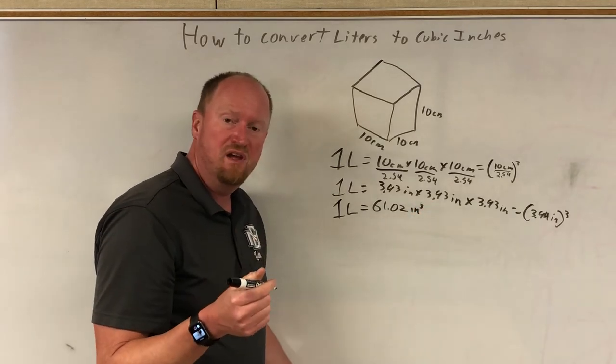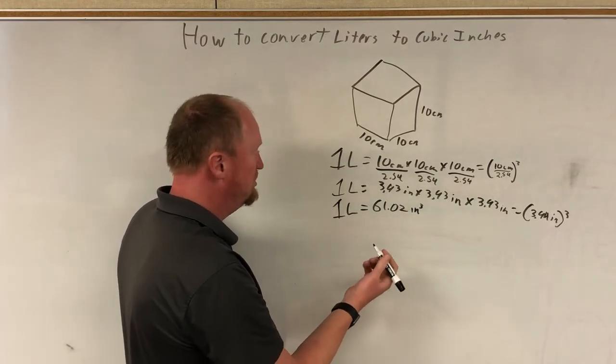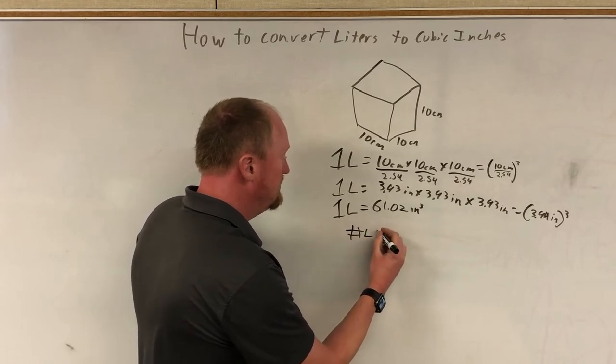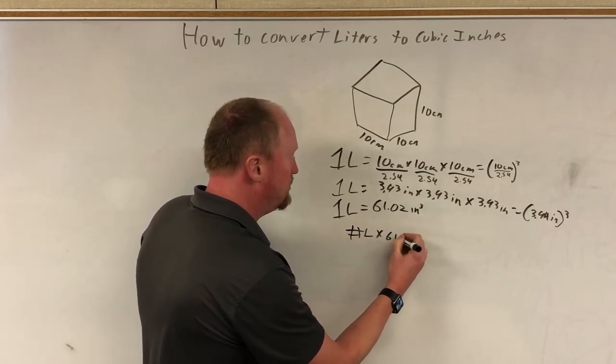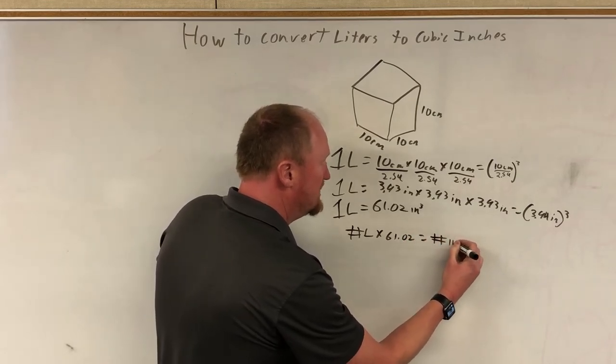So if you're converting liters to cubic inches, you take the number of liters, multiply by 61.02, and that equals the number of cubic inches.